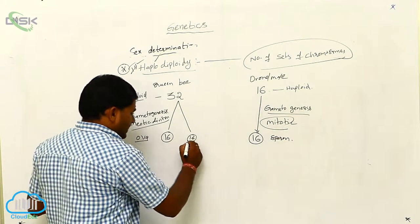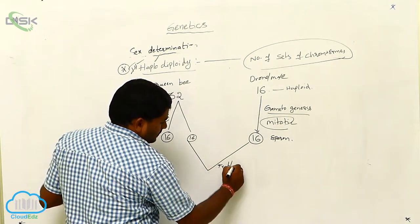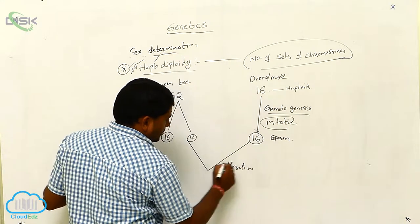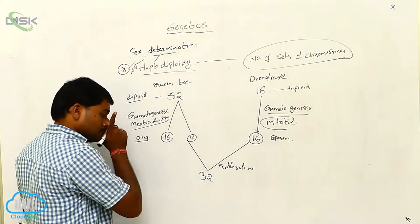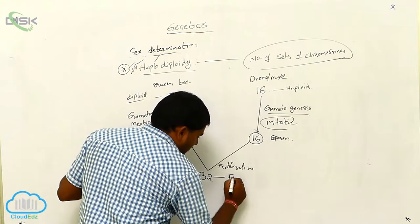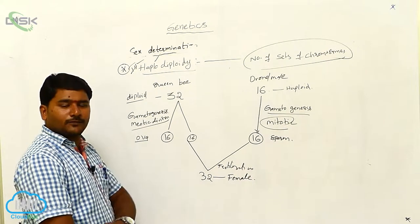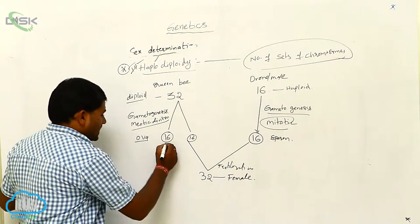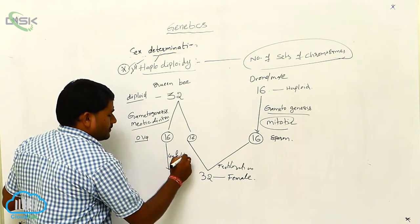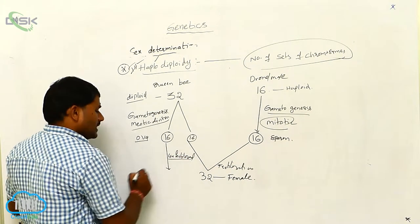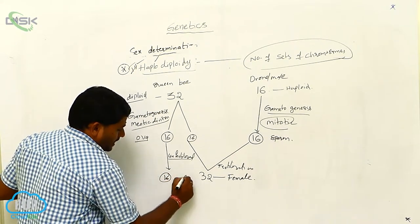When fertilization occurs — sperm (16) plus ova (16) — the result is 32 chromosomes, which develops into a female. Females have two sets of chromosomes. The unfertilized egg develops into a male.